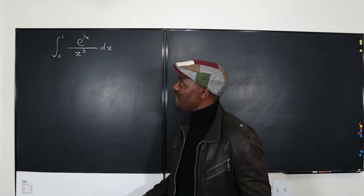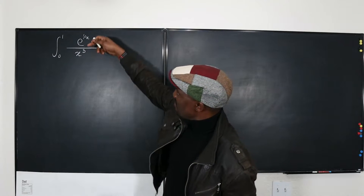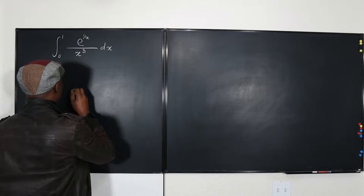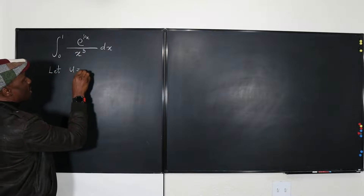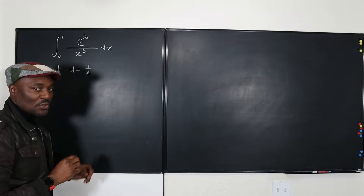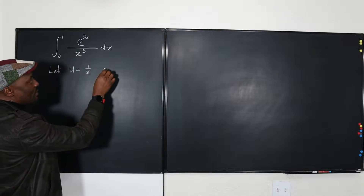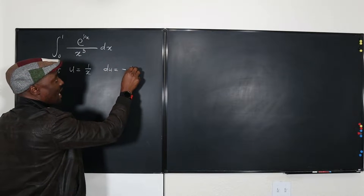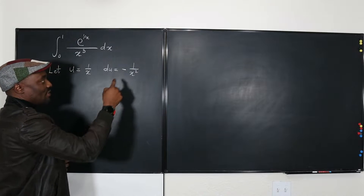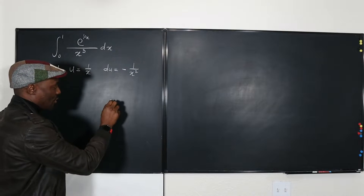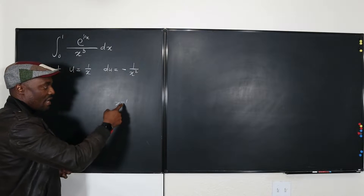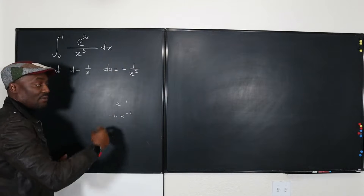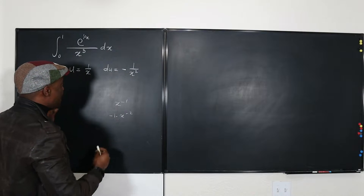The first thing I'm going to do is choose my u. My u is going to be 1 over x, because I don't know how to deal with that expression otherwise. So I'm going to say: let u equal 1 over x. Immediately, I need to find the derivative of u. du is going to be the derivative of 1 over x. Write it as x to the negative 1, bring the exponent down — that's negative 1 times x to the negative 2, which you can write as negative 1 over x squared dx.